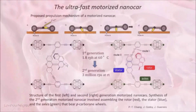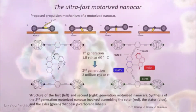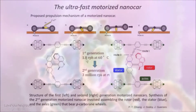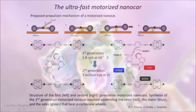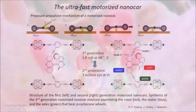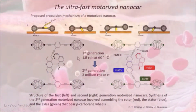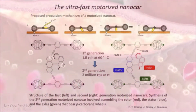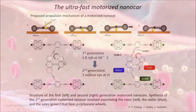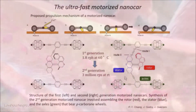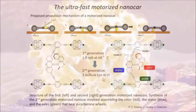We made this nano car — the first nano car we made with a motor in it. This motor would spin when you shine light on it, but it would spin at 1.8 revolutions per hour — very slow. But then when we pulled out this sulfur atom and closed this down to a five-member ring, it's going three million rotations per second.